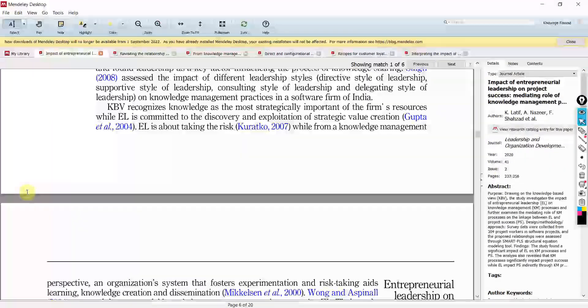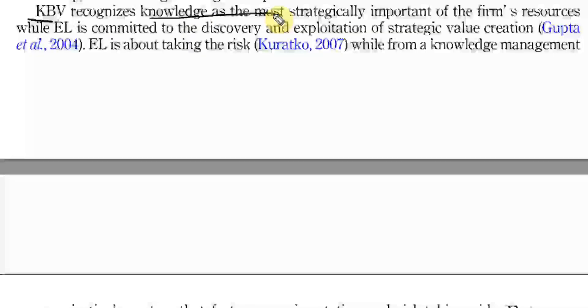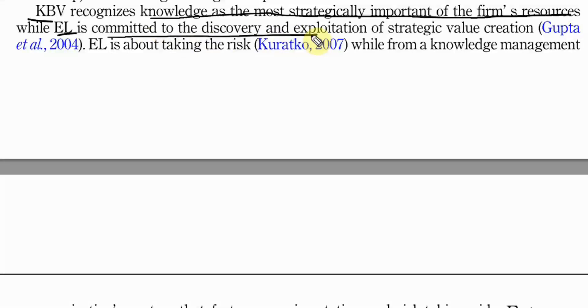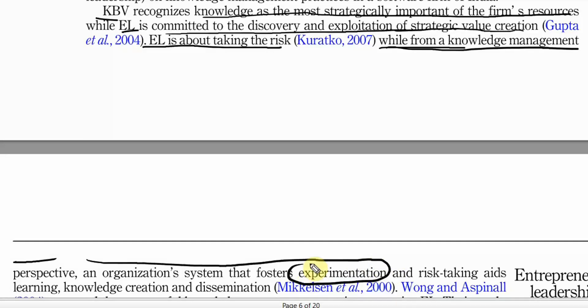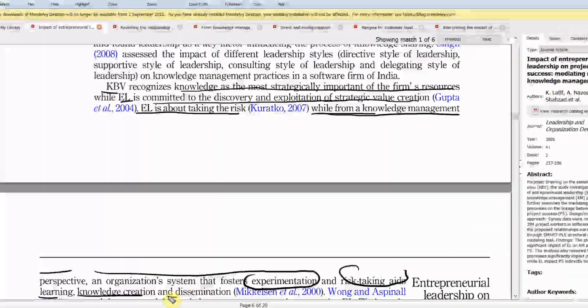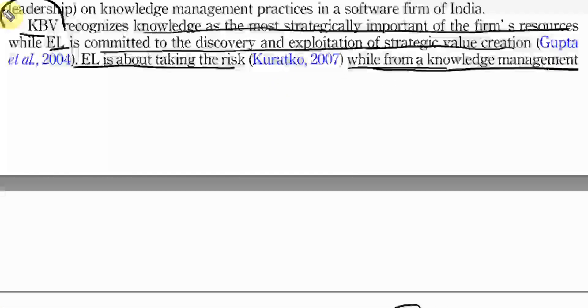Now, there are other examples as well. Look at this. KBV recognizes knowledge as the most strategically important firm resource, while EL is committed to discovery and exploitation of strategic value creation. Now, EL is about taking risks, while from a knowledge management perspective, an organization system that fosters experimentation and risk taking aids, learning knowledge creation and dissemination. So, what happens is that KBV recognizes knowledge as an strategic asset and it's an important resource.